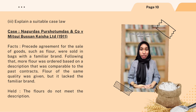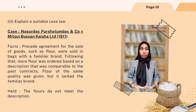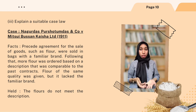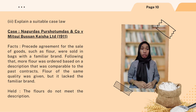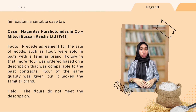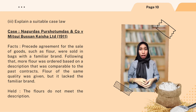Assalamualaikum and hi! My name is Adeline Izfarhida binti Abdul Rahim. My metric number is 10 DPM 20F 2047. The next question is to explain a suitable case law. The case is Nyanggurdas Pocetumdas & Co. vs. Mitsubusen Kaisha Ltd 1911. Facts: a preceding agreement for the sale of flour was sold in bags with a familiar brand. More flour was then ordered based on a description comparable to the past contract. Flour of the same quality was delivered but it lacked the familiar brand name. The holding was that the flour did not meet the description. In this case, a previous contract for the sale of flour was sold in bags with a well-known trademark. The new flour was ordered described as the same as the previous contract, but the delivered flour did not have the same well-known trademark and was therefore considered non-compliant with the description.